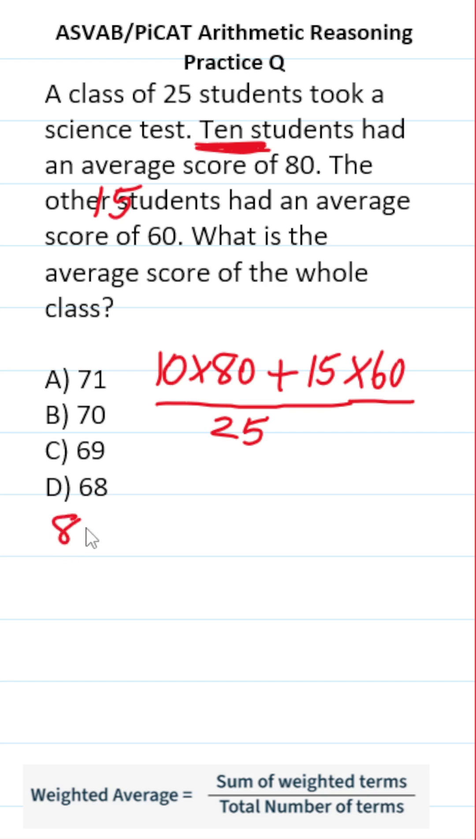You could start by doing 80 times 10. If you can't do that mentally, 0 times 0 is 0, 0 times 8 is 0. Add a 0 placeholder. 1 times 0 is 0, 8 times 1 is 8. We can see that this is 800.